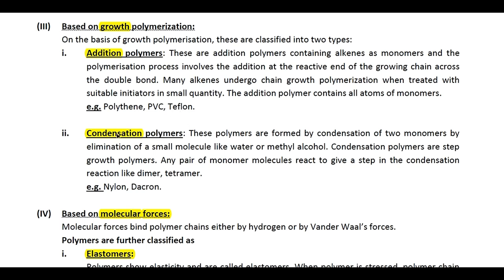Condensation polymers are formed by condensation of two monomers with elimination of a small molecule like water, methyl alcohol, or another small molecule. Condensation polymers are step-growth polymers, meaning the polymer grows step by step with elimination of the smaller molecule — for example through dimerization or forming a tetramer. Examples include nylon and Dacron (another name for terylene), the structures of which we will study.